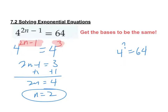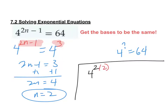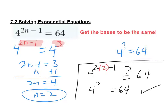Let's look at the original equation and check. If we plug n equals 2 in to check — does this equal 64? Well, what is 2 times 2 minus 1? That's 3. And we already figured out that 4 to the 3rd does equal 64, so it checks out. You don't have to check, but I just wanted to show you that it actually works.